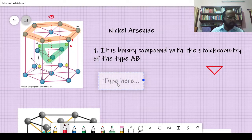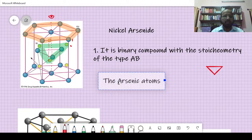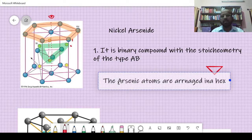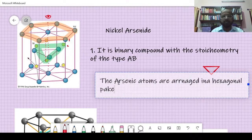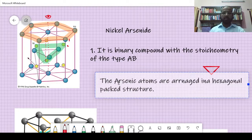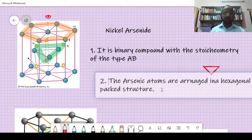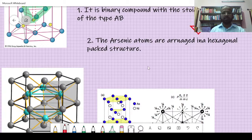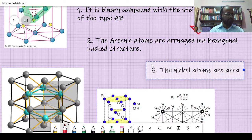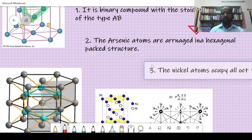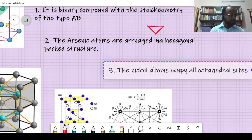Point one: the arsenic atoms are arranged in a hexagonal close packed structure. Point two: the nickel atoms occupy all octahedral sites.